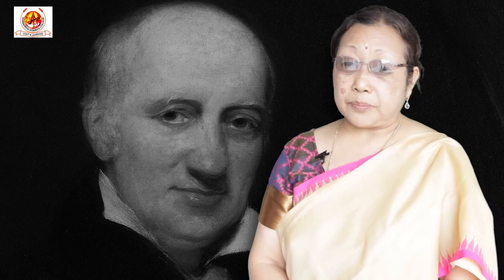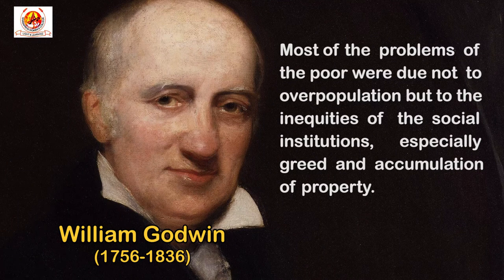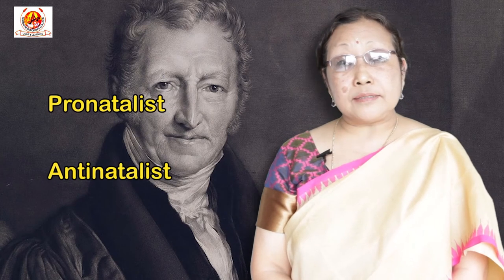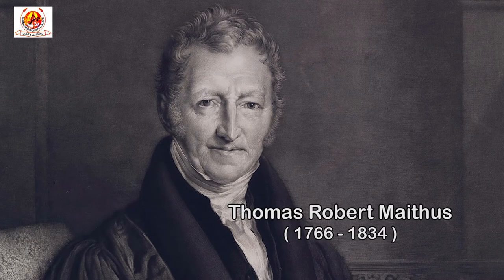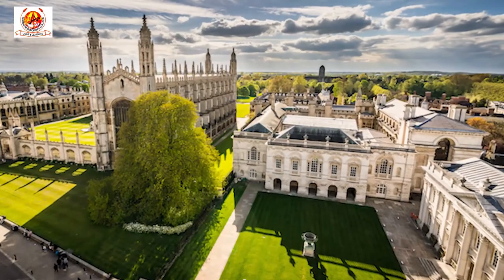Condorcet believed that if population growth ever crossed its limit, the final solution would be birth control. William Godwin similarly argued that scientific progress would enable the food supply to grow far beyond existing levels and that poverty among the poor was due not to overpopulation but to the inequities of social institutions, especially greed and accumulation of property. Population doctrines prior to Malthus were either pro-natalist or anti-natalist and often utopian. Thomas Robert Malthus, having just graduated from Cambridge, read and contemplated the works of Godwin, Condorcet, and others who shared utopian views of the perfectibility of human society.